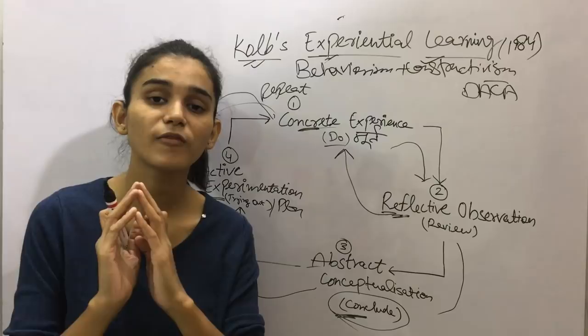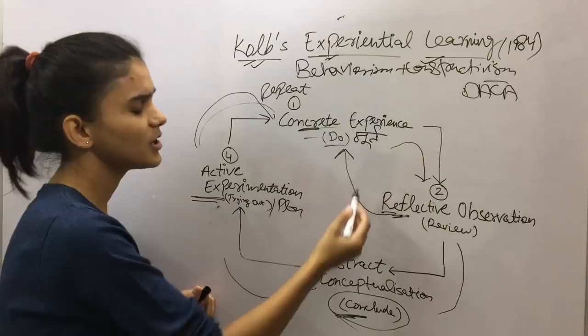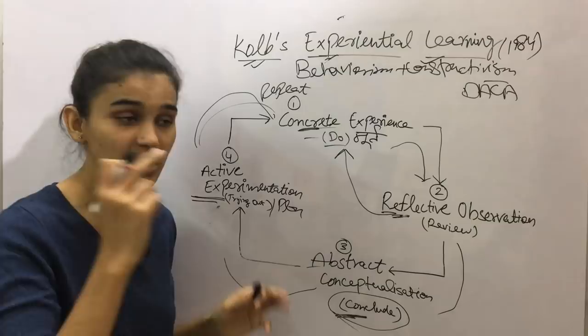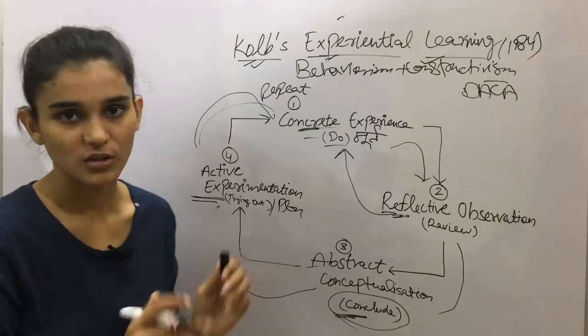After reviewing and observing, you make a concept of what to do in the next live session — for example, to focus more on questions and discussion rather than one-way delivery. That is Abstract Conceptualization. Then on July 11th, you try out and apply the concept you planned, taking questions throughout the session. That is Active Experimentation applied on the next day.